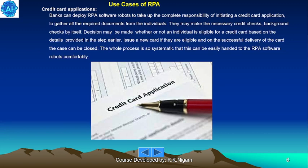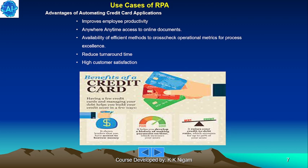Credit card applications: banks can deploy RPA software robots to take complete responsibility for initiating a credit card application — gathering all required documents, performing necessary credit checks and background checks, making eligibility decisions, issuing a new credit card if eligible, and confirming successful delivery. Advantages of automating credit card applications include improved employee productivity, anywhere-anytime access to online documents, operational metrics for process excellence, and reduced turnaround time with high customer satisfaction.